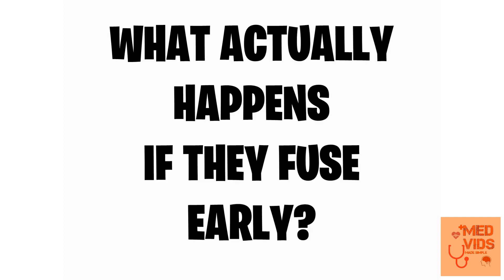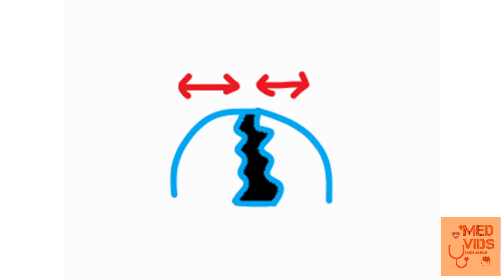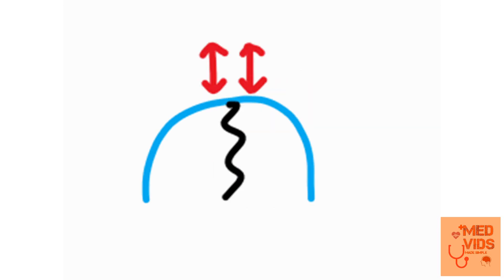What actually happens if the sutures fuse very early? Normally, the skull grows in the direction perpendicular to the sutures, elongating to accommodate the growing brain. If the sutures fuse very early, the skull will not be able to grow in the perpendicular direction. Instead, it will start to grow parallel to the fused sutures, leading to various abnormalities of the skull — this is what craniosynostosis is.